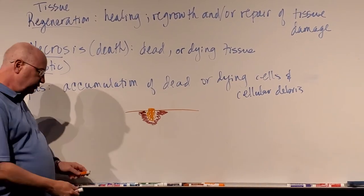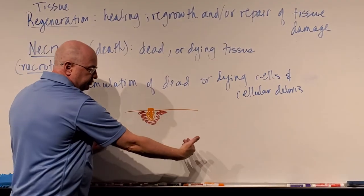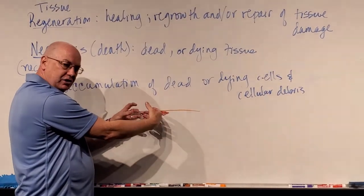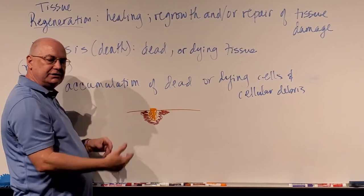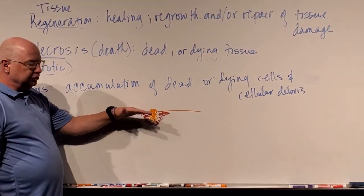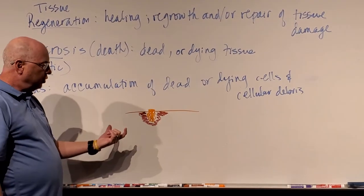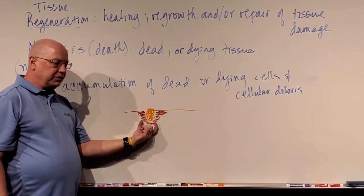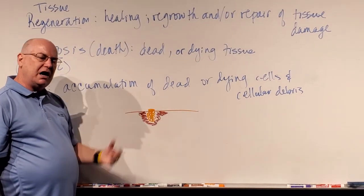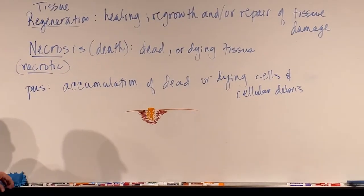Essentially what pus is is the cells in the tissue — and sometimes your white blood cells coming in to fight this — are being slaughtered, and you're seeing the dead bodies of these cells building up in the tissue. It's a sign that your body is losing the battle to the infection, or that you have restricted blood flow and the tissue is starting to die and rot. It's dead or rotting tissue — an accumulation of it.